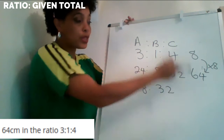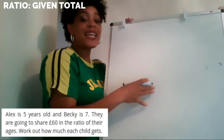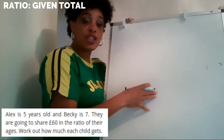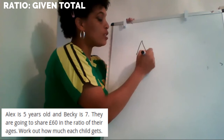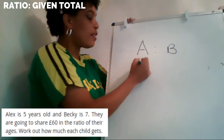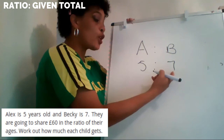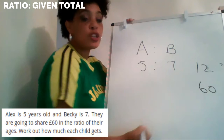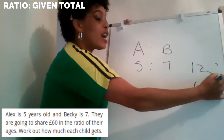Alex is five years old and Becky is seven years old. They're sharing 60 pounds in the ratio of their ages. How much does each child get? In this case, we're told it is Alex and Becky. So Alex and Becky are in the ratio five to seven. That 60 pounds is going to be shared into 12 parts. So I put my 12 there — 60 pounds shared into 12 parts. What do I do to 12 to get to 60? Times it by five.